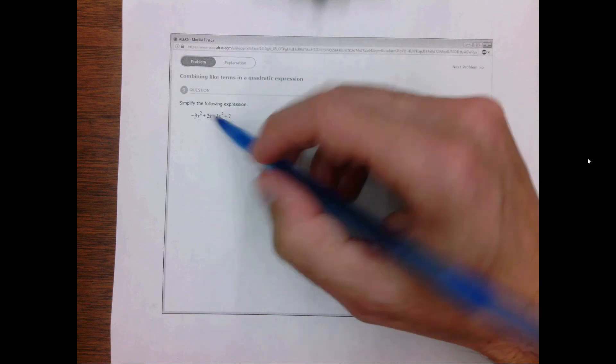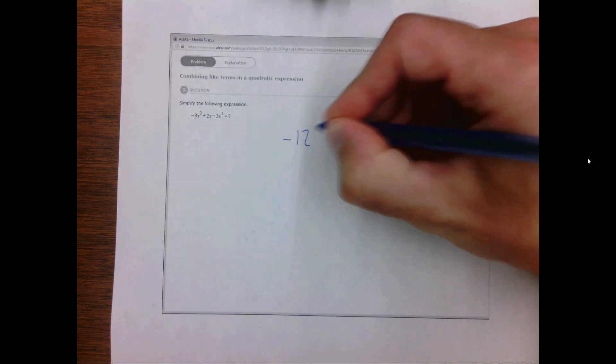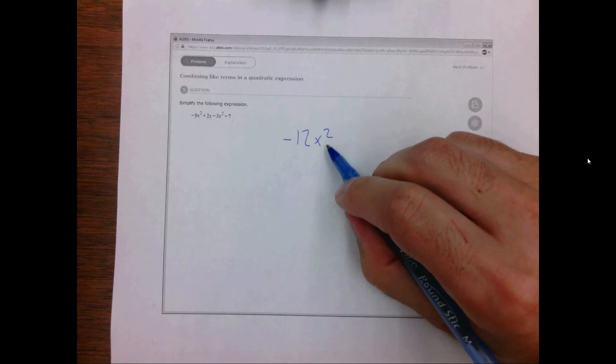To do this we want to take minus 9 minus 3 which is minus 12, and since they both are followed by x squared we continue putting the x squared at the end.